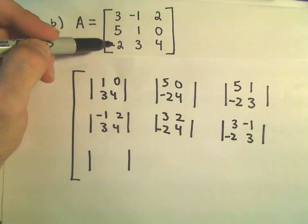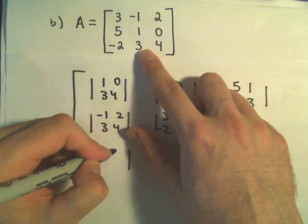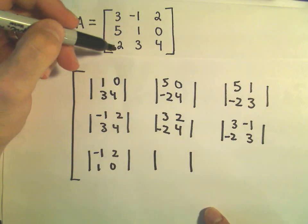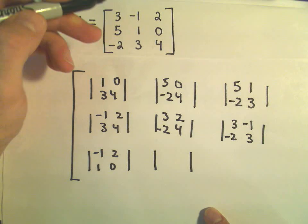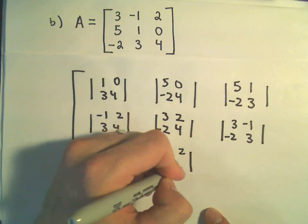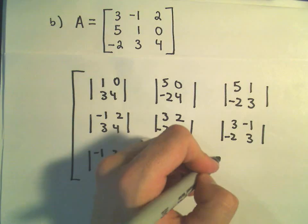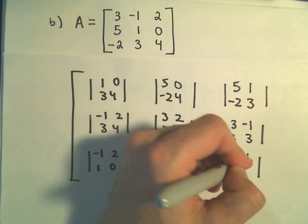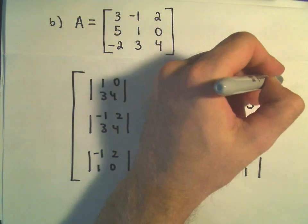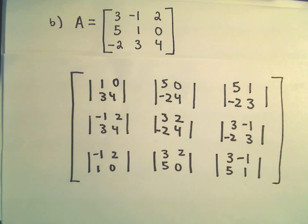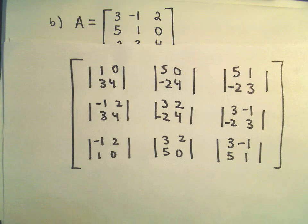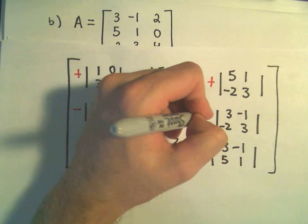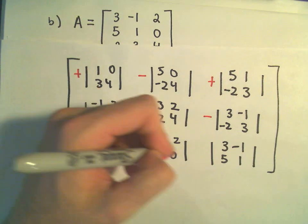If we cover up the third row and first column, we have negative 1, 2, 1, 0. If we cover up the third row and second column, we have 3, 2, 5, 0. And if we cover up the last row and last column, we have 3, negative 1, 5, 1. I also have to change the signs using the pattern: positive, negative, positive, negative, positive, negative, positive, negative, positive.